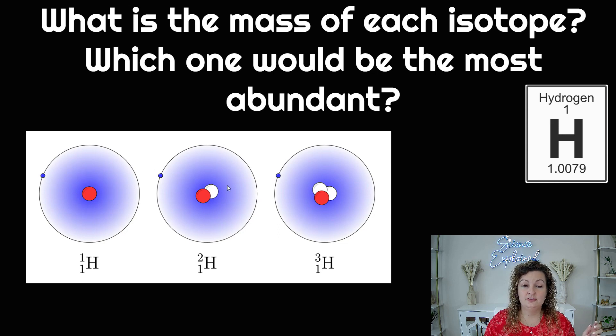This one has no neutrons, one neutron, and then two neutrons. And we can see that this has a mass of one, a mass of two, and a mass of three. So our mass are coming from our nucleus. So we need to look at the nucleus for that number when given a model.